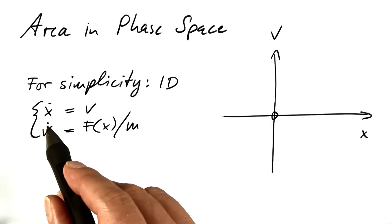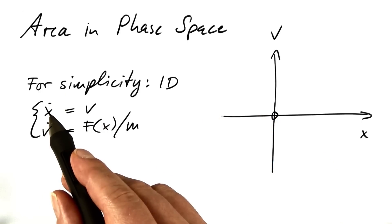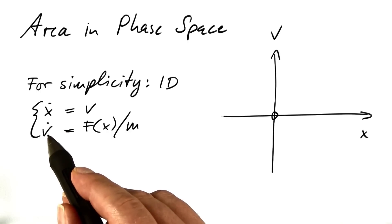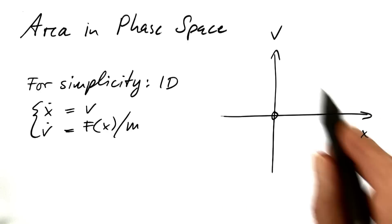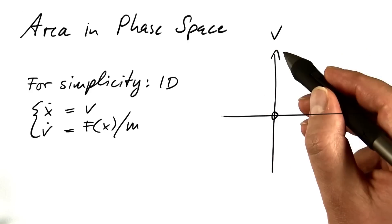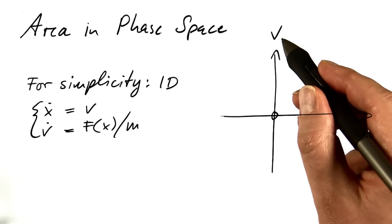For simplicity, I'm looking at a one-dimensional system. The position has one dimension, just a single number. The velocity has one dimension, just a single number. Phase space has the coordinates x and v, and physicists actually use the momentum, which is mass times velocity. I don't want you to be confused, so I stick to velocity.